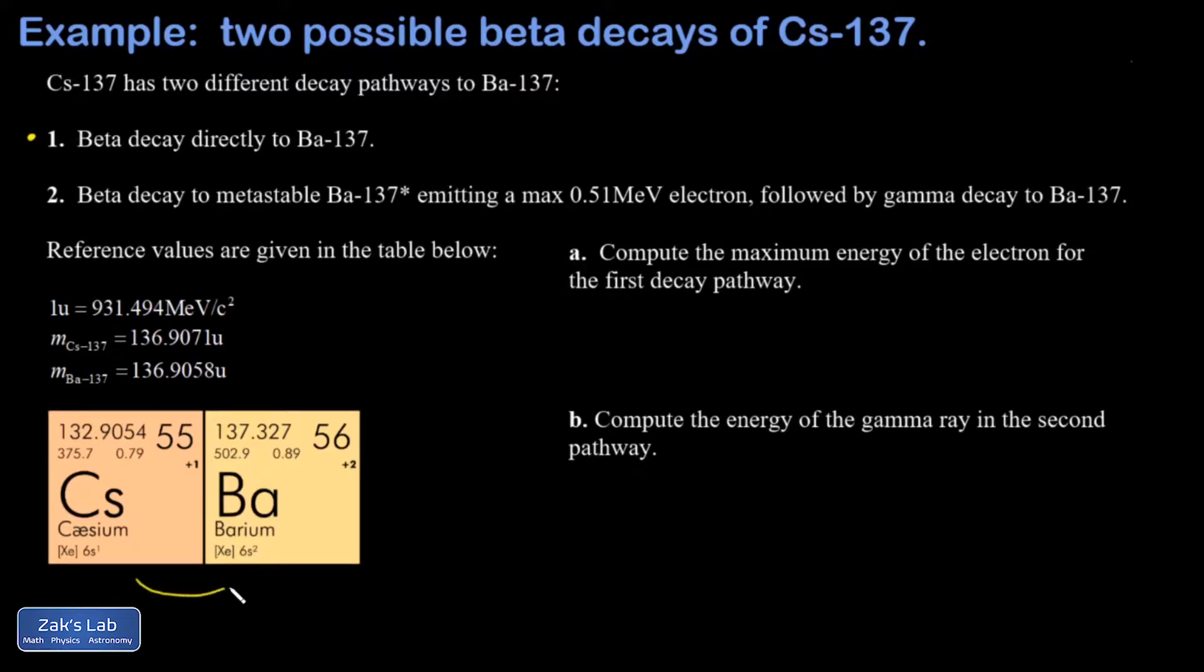bouncing one space to the right in the periodic table because a beta decay means that a neutron has turned into a proton in the nucleus, and then a high-energy electron is emitted. That's called a beta particle.